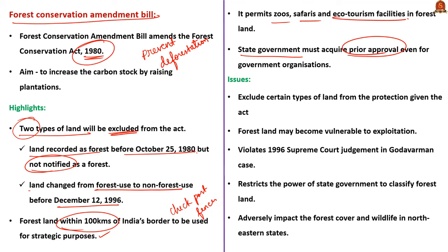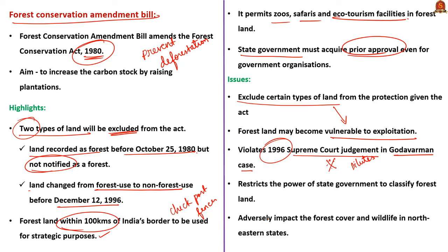Now let us see the issues with this Act. As the new amendment proposes to exclude certain types of land from the protection given by the Act, they become vulnerable to exploitation. This provision may go against the 1996 Supreme Court judgment in the Godavarman case, which provided protection to vast areas of forest against deforestation. The new amendments also restrict the power of state governments to classify forest land. Allowing projects like zoos and ecotourism facilities may also affect forest land and wildlife in sensitive regions.